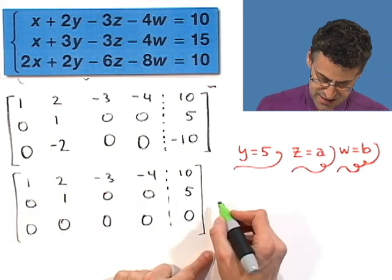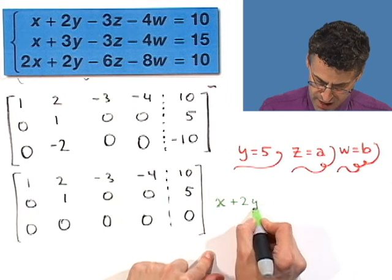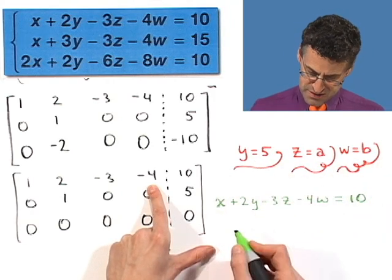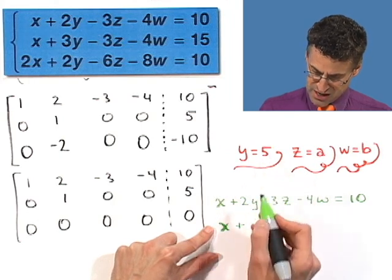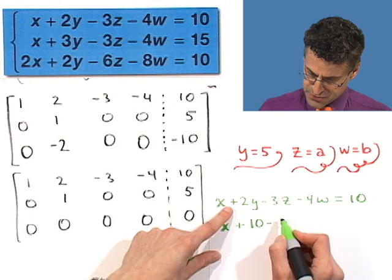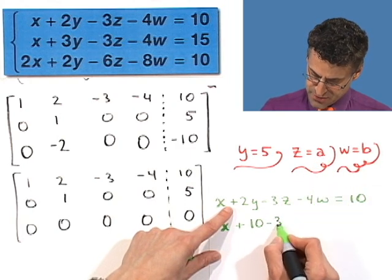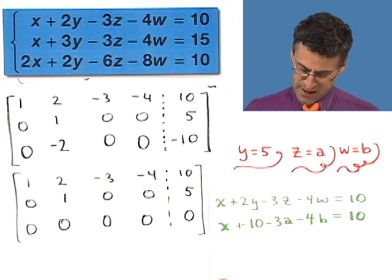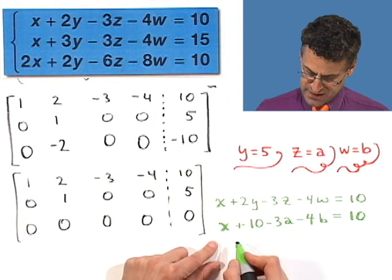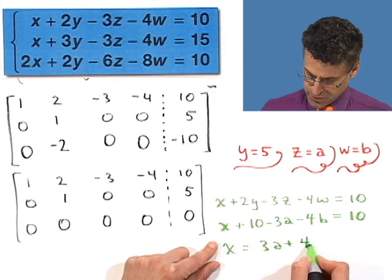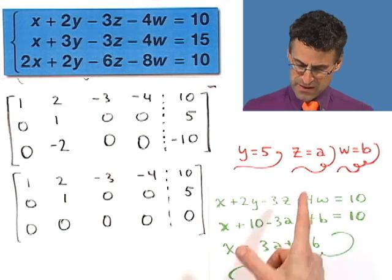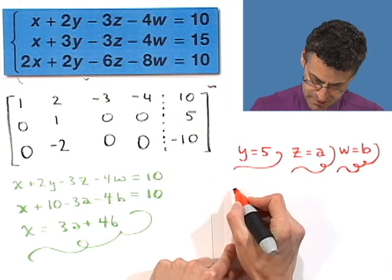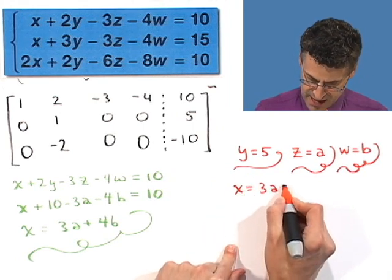This first row actually tells me that x is dependent on these things. And how so? Well, if we translate this, this says that x plus 2y minus 3z minus 4w equals 10. And if I insert what we know, I see that x plus 2 times 5, which is 10, minus 3 times z, which is a, so minus 3a, minus 4 times w, which we're calling b, equals 10. If I subtract 10 from both sides, notice that they drop out. And if I add 3a to both sides and 4b to both sides, I see that x equals 3a plus 4b. And so that's the value for x given the value for z and w being a and b. So what that means is, I now see what x equals. X is going to equal 3a plus 4b.